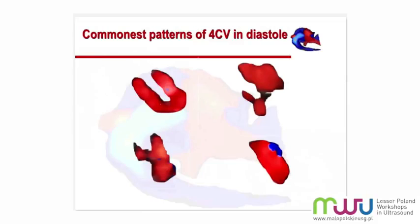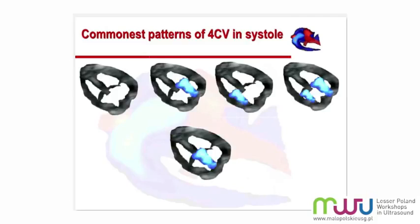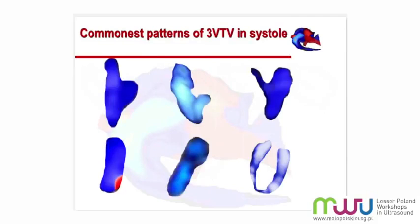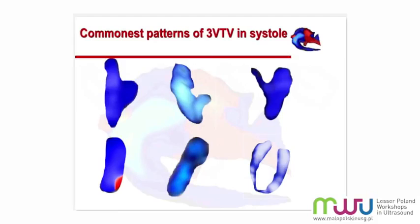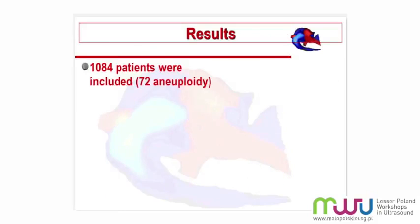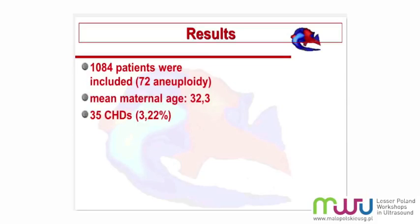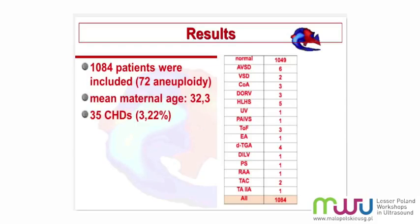I will describe these patterns in further analysis. We also analyzed the potential patterns at the level of three vessels and trachea, presented in this slide. Regarding our results, we had 35 cardiac anomalies in total, including four cases of d-transposition, three cases of tetralogy of Fallot, three cases of double outlet, and also some complex anomalies as shown in the slide.